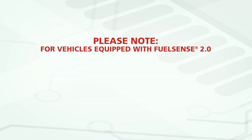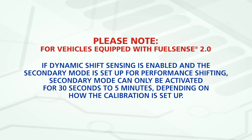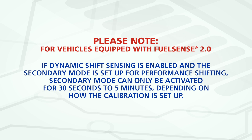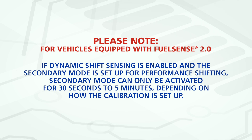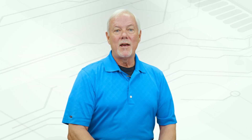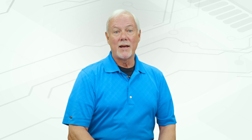Please note, for vehicles equipped with FuelSense 2.0, if dynamic shift sensing is enabled and the secondary mode is set up for performance shifting, secondary mode can only be activated for 30 seconds to 5 minutes, depending on how the calibration is set up.